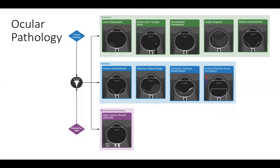We'll also discuss a retinal detachment and how to distinguish that from a vitreous hemorrhage or a vitreous detachment. When looking at painless loss of vision, you can see a retinal detachment or vitreous detachment, and a more advanced feature is to also look for central retinal artery occlusion.